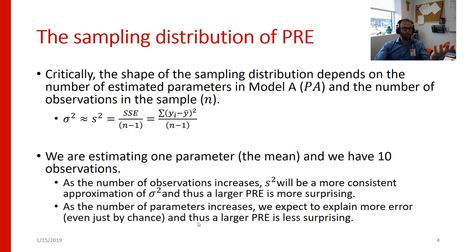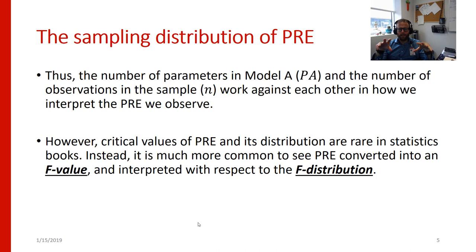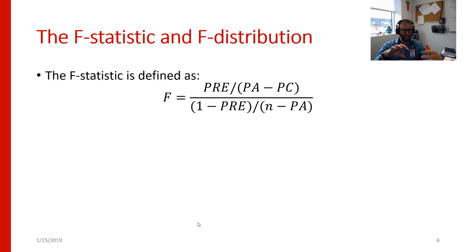Critical values of PRE and its sampling distribution are relatively rare in statistics textbooks. Instead, it's much more common to see PRE converted into an F value and interpreted with respect to the F distribution. So in this video, we really want to talk about what the F distribution is and how we're going to be able to use it to draw inferences from the data in our sample. The F statistic is actually based on the proportional reduction in error, but it is scaled to the number of parameters in our model and it's a ratio of the variance we're explaining against the variance that remains to be explained.